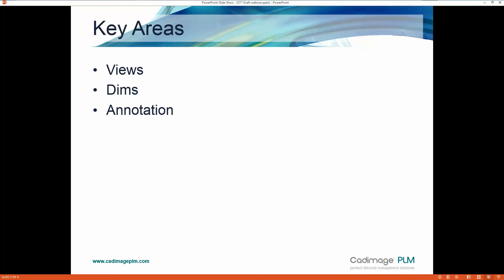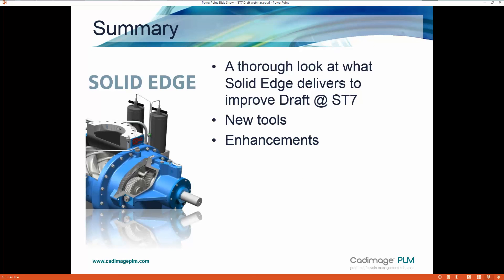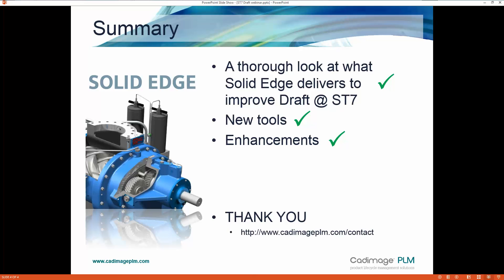Those are the key areas and key changes in Solid Edge ST7 in the Draft environment. There are new coordinate dimension commands, dynamic preview — expanding on what was added in ST6 — which reduces guesswork when creating 3D and isometric views. Nice enhancements to the coordinate system tool, the Parts List with preview thumbnails, and the ability to create drawing views of individual frame members — all really useful tools. If you have any feedback or sessions you'd like to see in the future, please feel free to drop us a line.